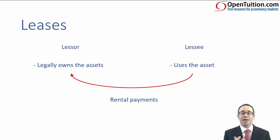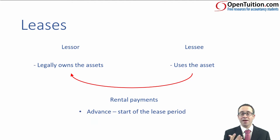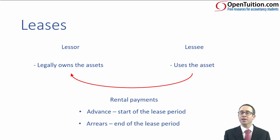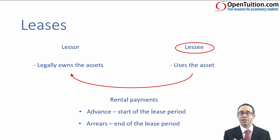The lessee will make payments to the lessor either in advance — so payments at the start of the lease period — or they will be made in arrears, which is at the end of the lease period. When you looked at this from an F7 perspective, the focus was looking at it from the lessee's perspective.